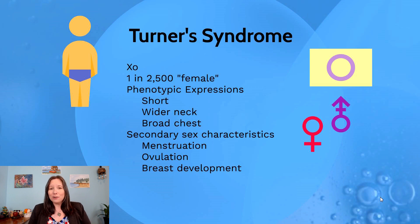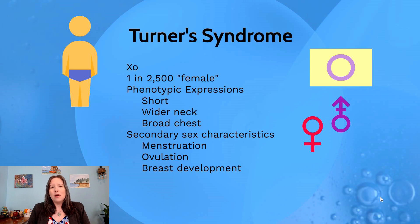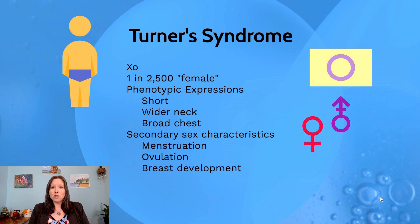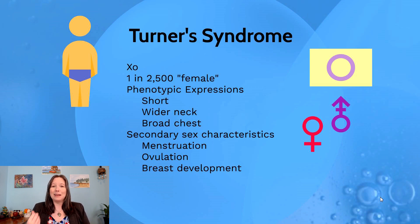Individuals with Turner syndrome tend to experience underdevelopment of their secondary sex characteristics. In particular, their breast development tends to differ, with smaller and less rounded breasts. They may not start to menstruate and may never ovulate, so many individuals with Turner syndrome are not able to conceive. Many people with Turner syndrome do identify as females and women, but some prefer to identify as intersex — it's really up to the individual, as not all will experience these phenotypical traits to the same degree.